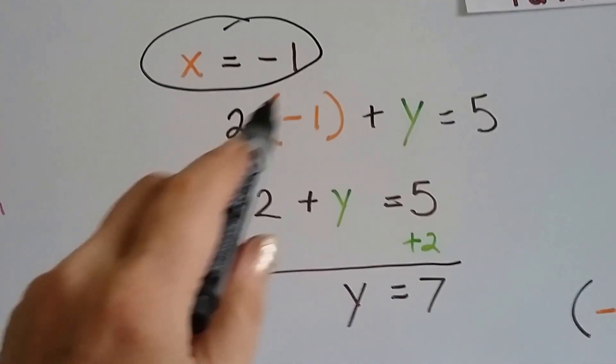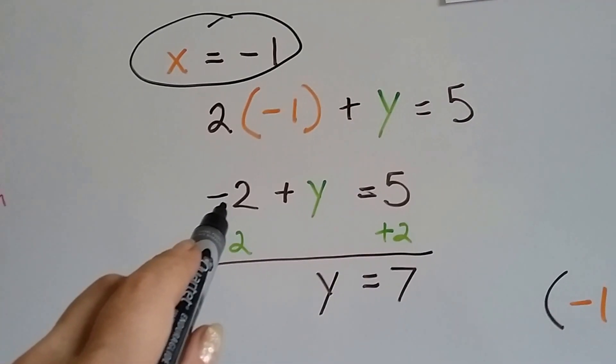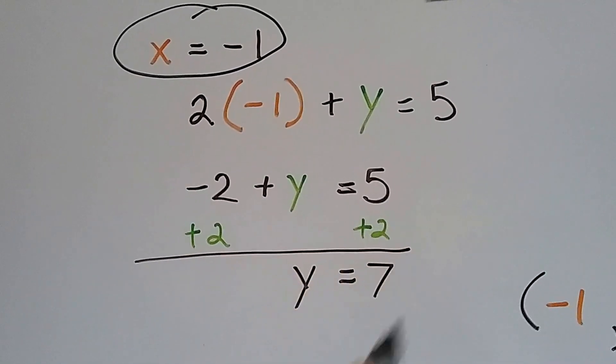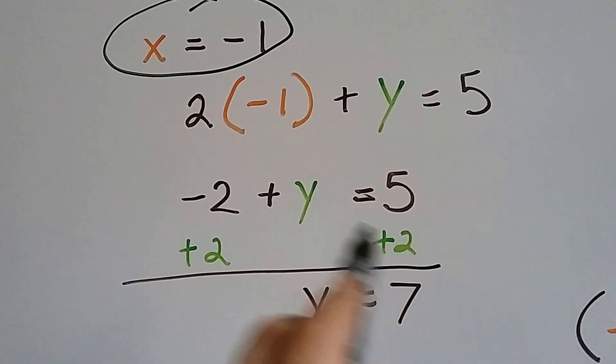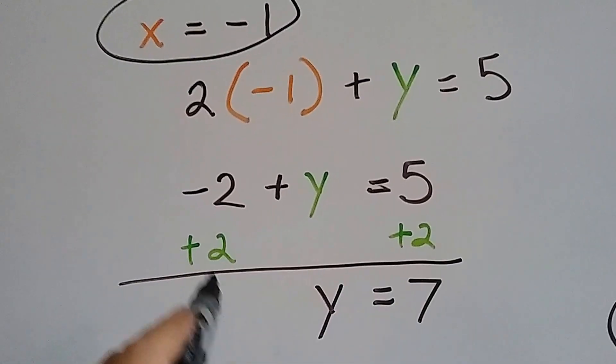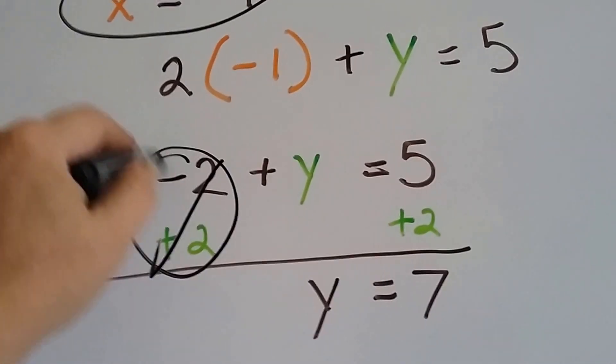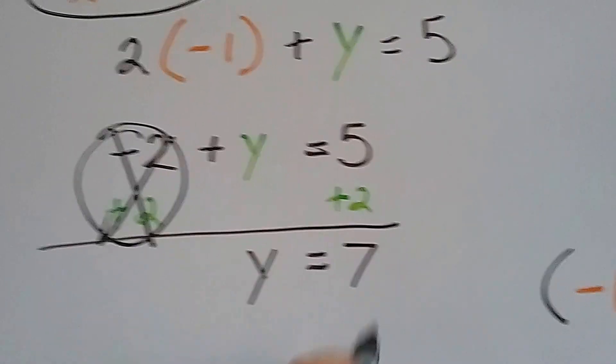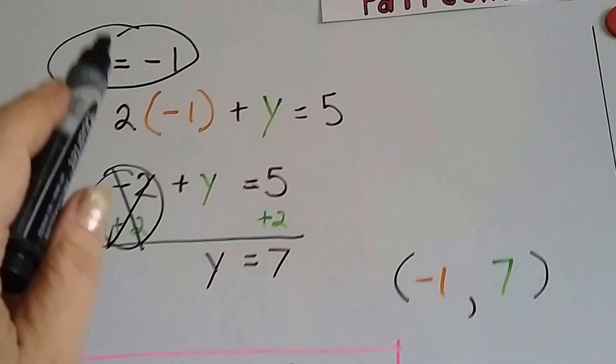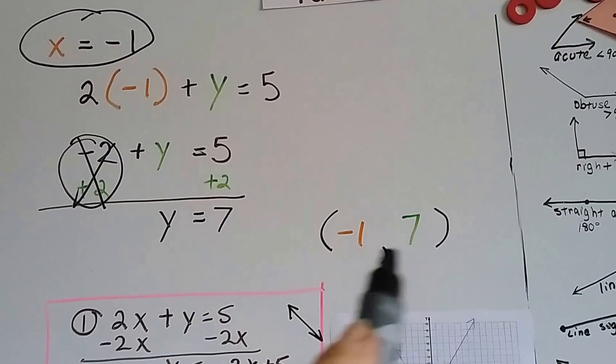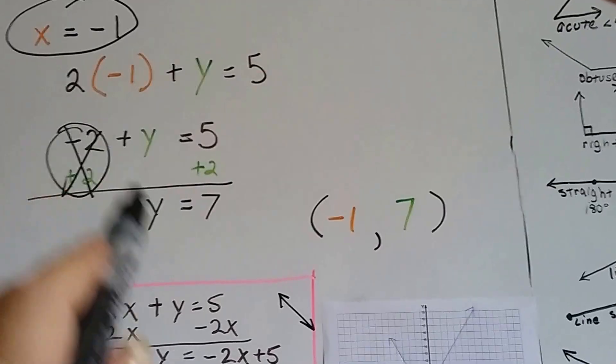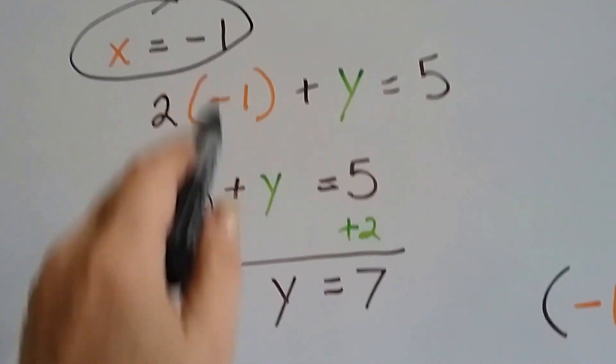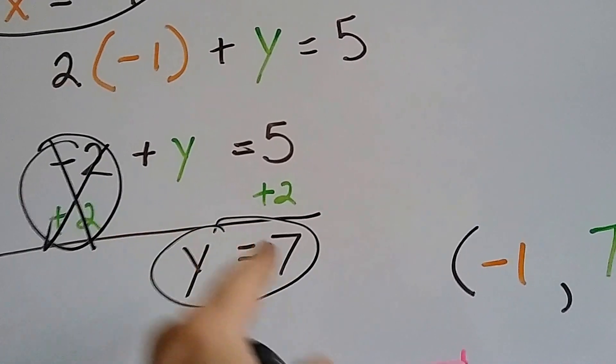So now 2 times a negative 1 is a negative 2 plus y equals 5, so I'm going to add 2 to each side so that I can isolate this y. And I do, and that creates a zero pair, and we add 2 to this side we get a 7. We get y equals 7. So now I know my ordered pair is negative 1, 7. This is what x equals negative 1, and here's what y equals, it's a 7.